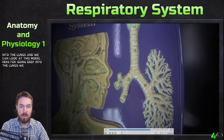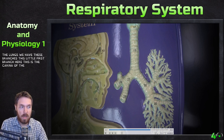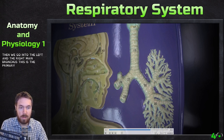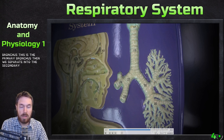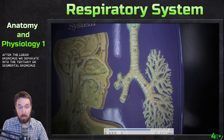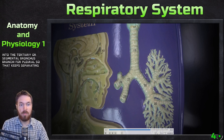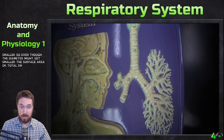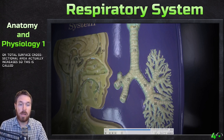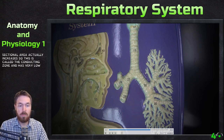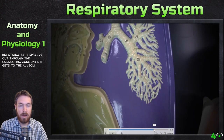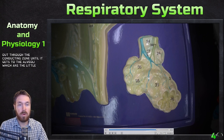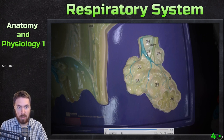Looking at this model for the deeper lung structures: the first branch here is the carina of the trachea, then we go into the left and right main bronchus — the primary bronchus. Then we separate into the secondary bronchus, or lobar bronchus, then into the tertiary or segmental bronchi. This keeps separating down smaller and smaller. Even though the diameter gets smaller, the total cross-sectional surface area actually increases. This is called the conducting zone and has very low resistance, continuing until it reaches the alveoli.